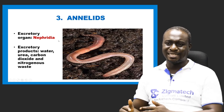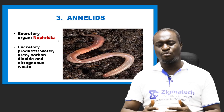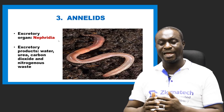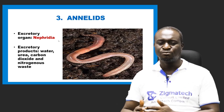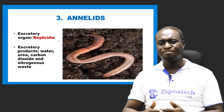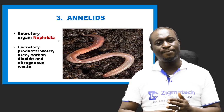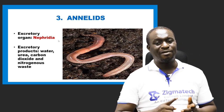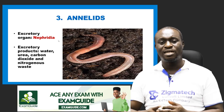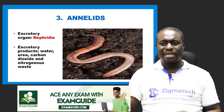Number three, we have the annelids. An example of an annelid is the earthworm. The excretory organ of the earthworm is called nephridia — singular form is nephridium. The excretory products of annelids include excess water, urea, carbon dioxide, and nitrogenous waste.